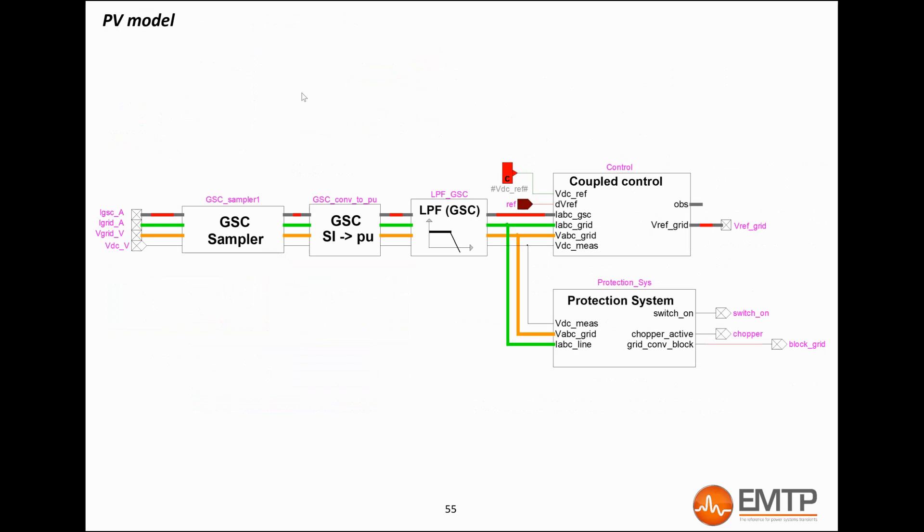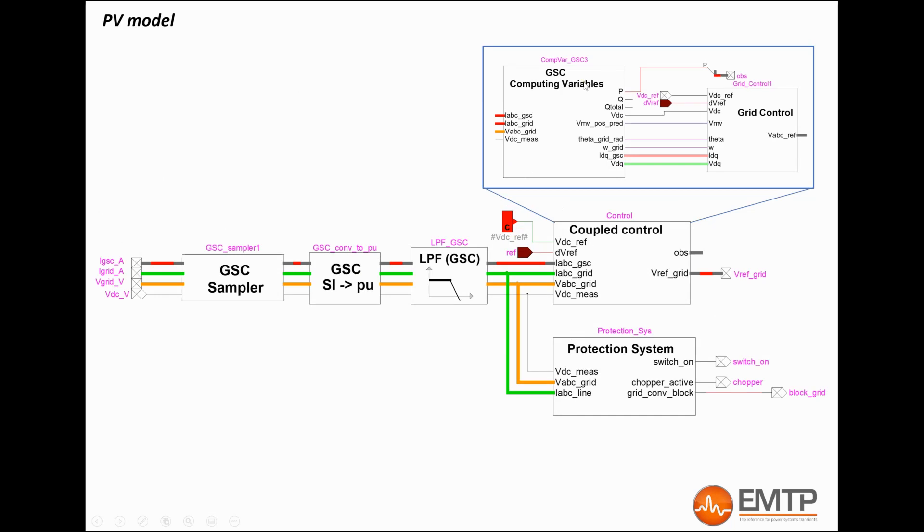Here is the control and protection diagram of the EMTP 4.1 PV park. The sampled signals, which are the voltage and current on each side of the converter, are put in per unit and filtered. The input measuring filters are low-pass type. The compute variables block computes the variables used by the grid control device and the protection system.